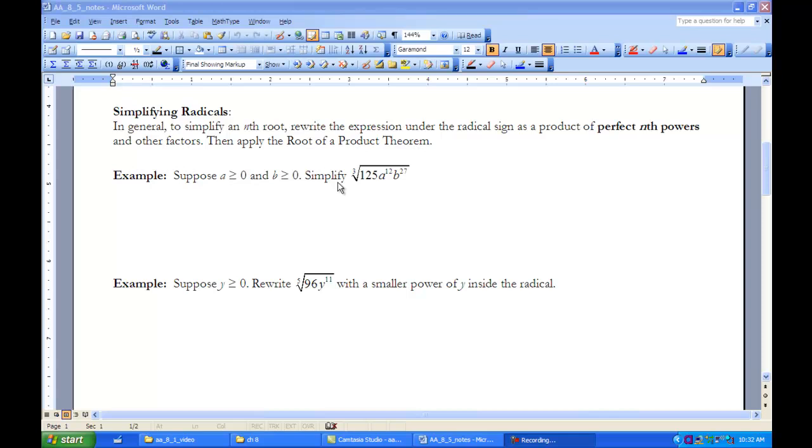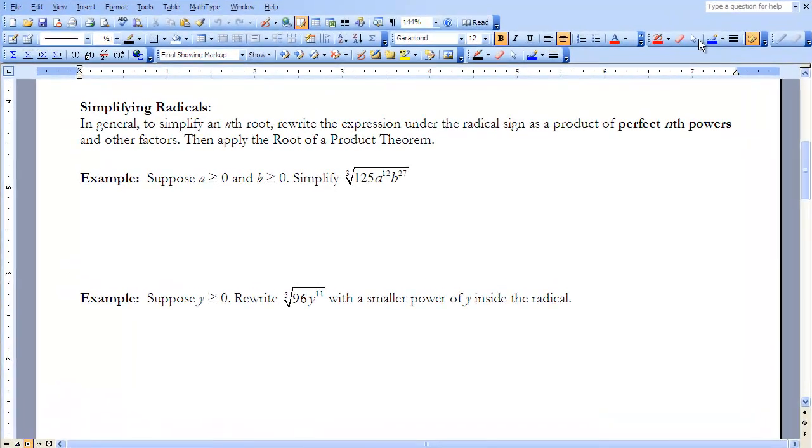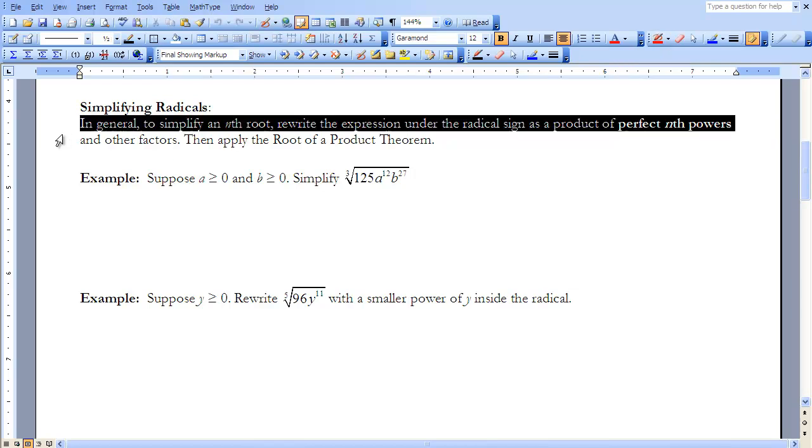For the first example, suppose that a is greater than or equal to 0 and b is greater than or equal to 0. We're going to simplify the third root of 125 a to the 12th b to the 27th.